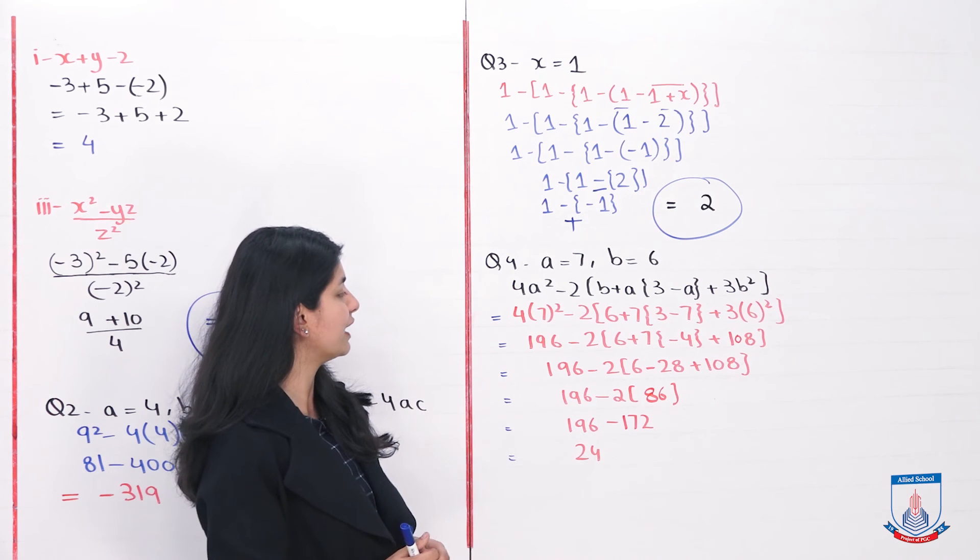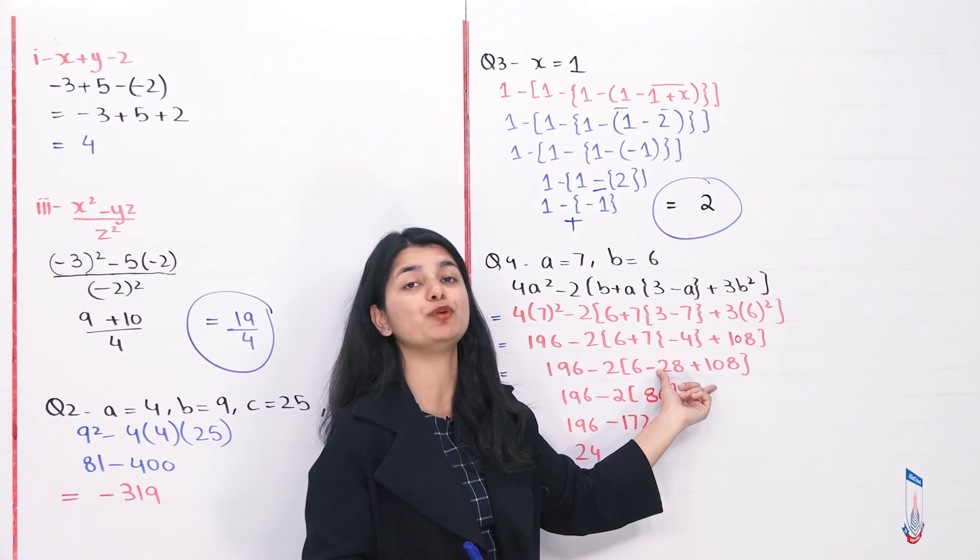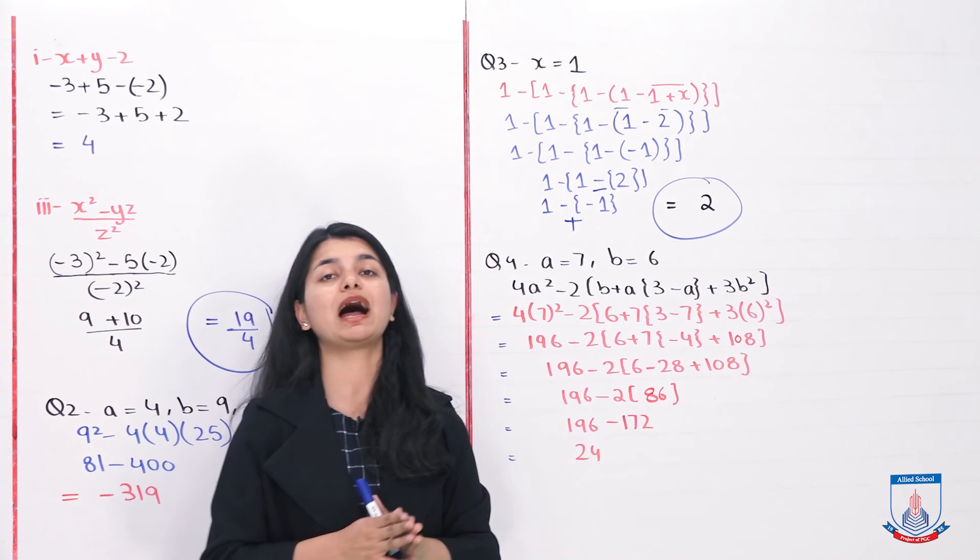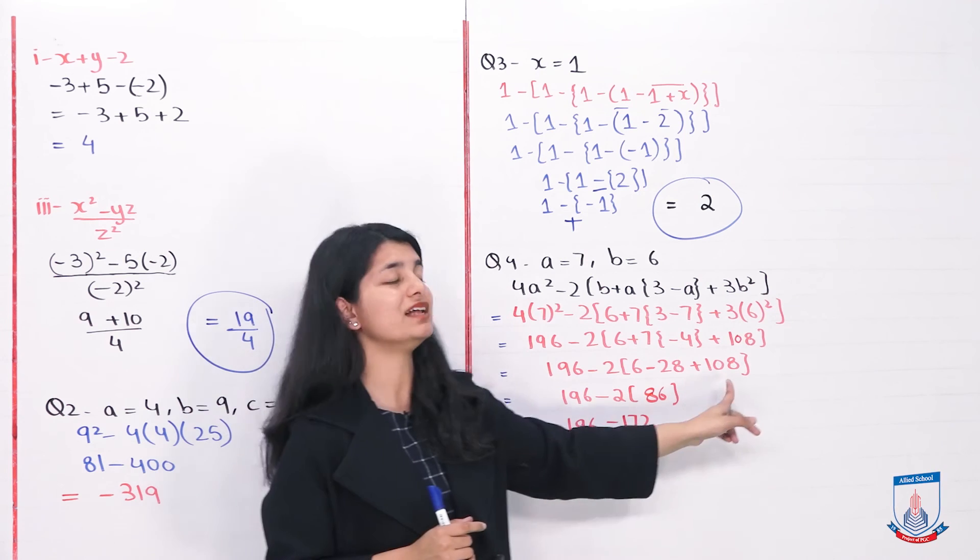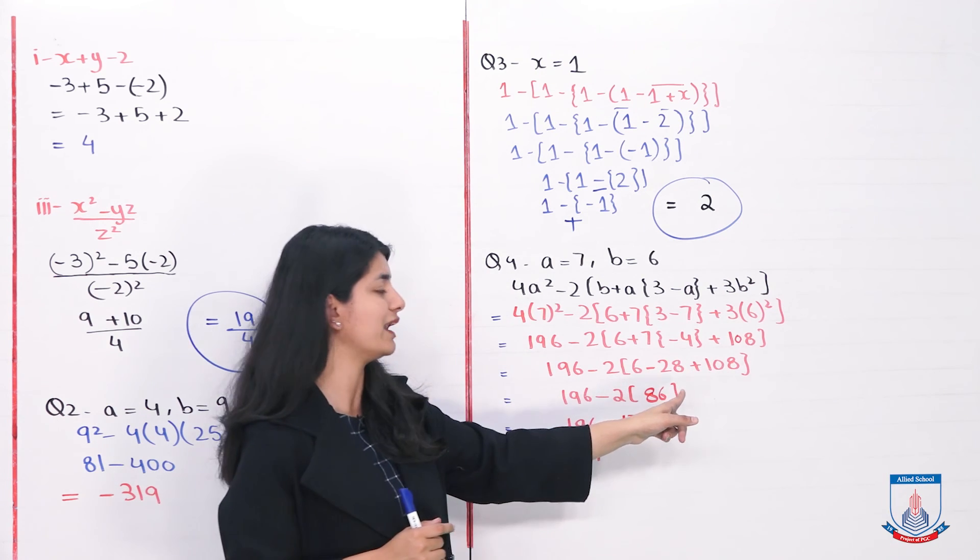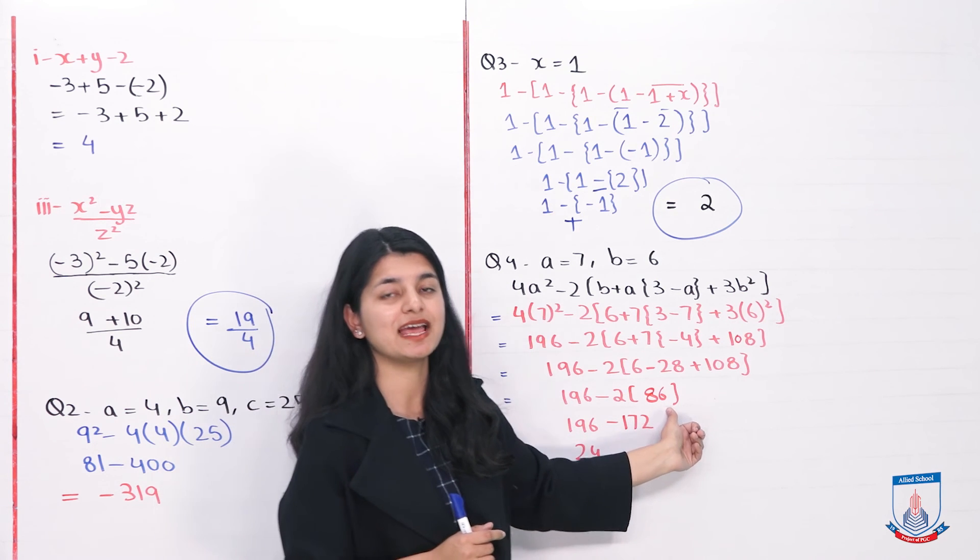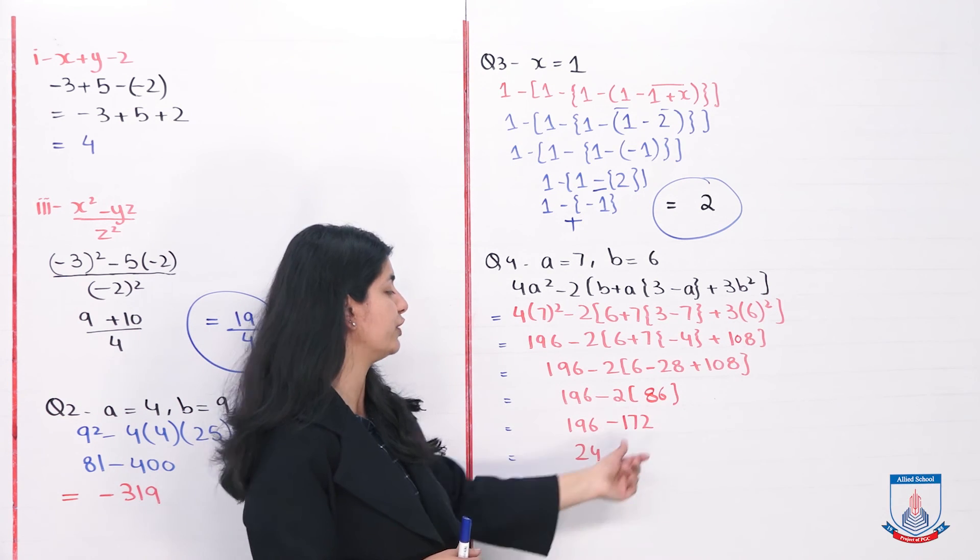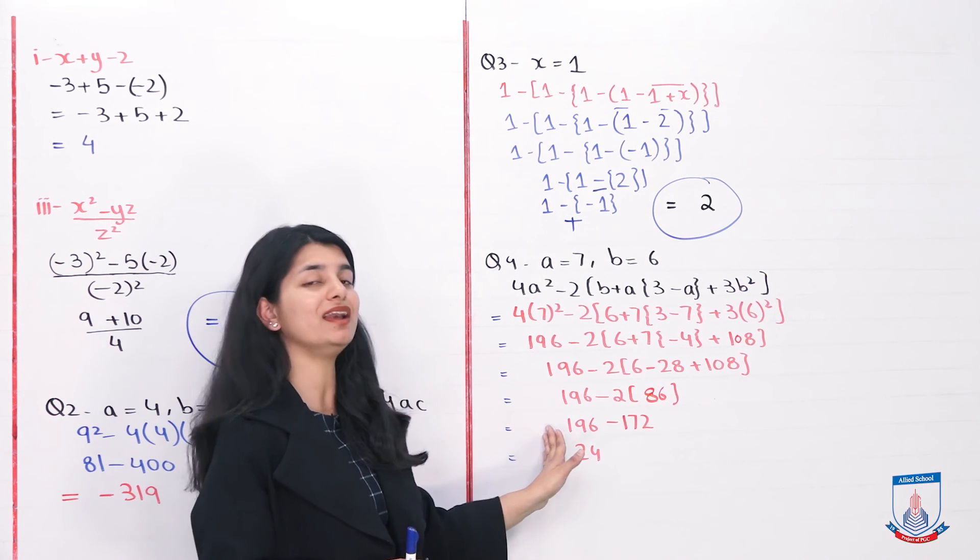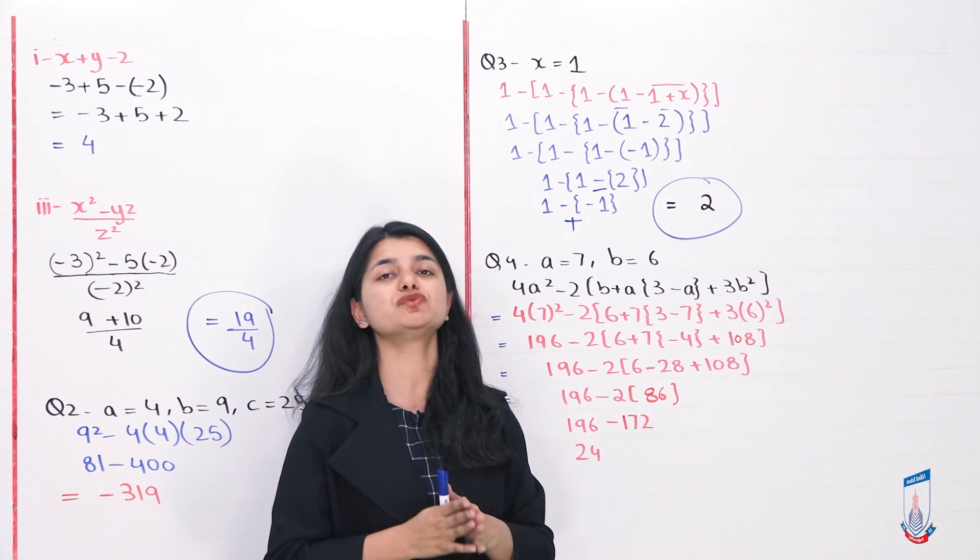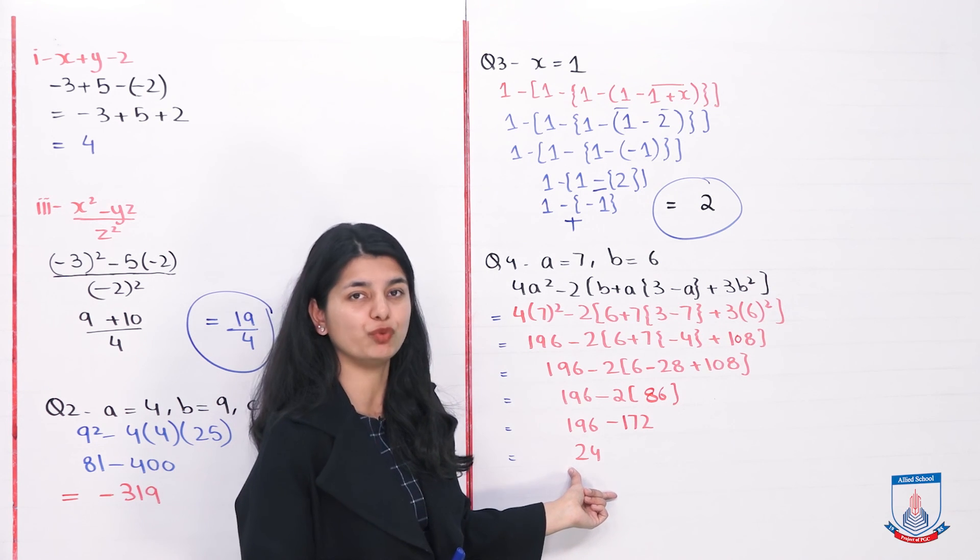Next, we have 2 with these three things inside the bracket. First we resolve them together. When you subtract 28 from 108 and add 6, the answer is 86. Then you multiply that 86 by 2 to get minus 172. From 196, you subtract minus 172, and your answer will be 24.